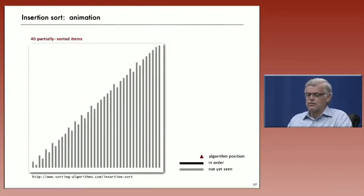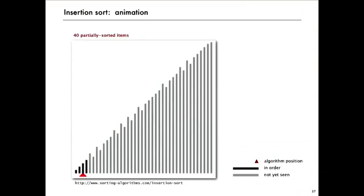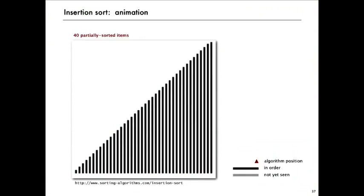So let's look at how that looks in the animation. Here's a partially sorted array. And you can see that insertion sort quickly gets the job done. We're going to take advantage of this a little bit later in this lecture. That's insertion sort, our second elementary sorting method.